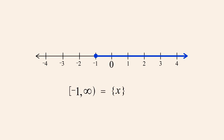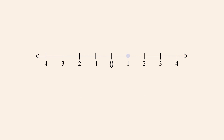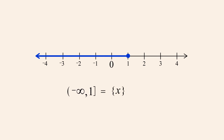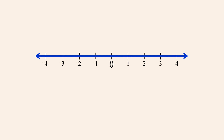This is the set of all x such that x is greater than or equal to negative 1. If an interval has no lower bound, we say that the interval is left unbounded. This is indicated by replacing the left endpoint with a negative infinity symbol. This is the set of all x such that x is less than or equal to 1.